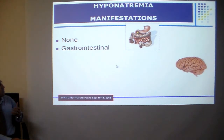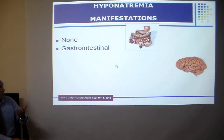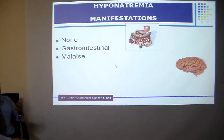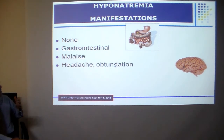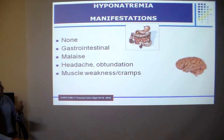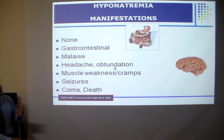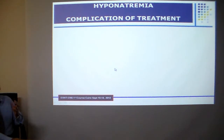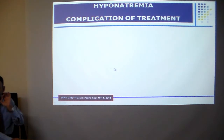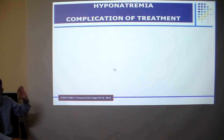Hyponatremia may present with bloating, nausea, and vomiting, or it may progress to CNS manifestations starting with malaise, then headache, obtundation, seizures, coma, and respiratory arrest. There is another manifestation which is not due to hyponatremia itself but due to wrong treatment — this is what is called osmotic demyelination syndrome.